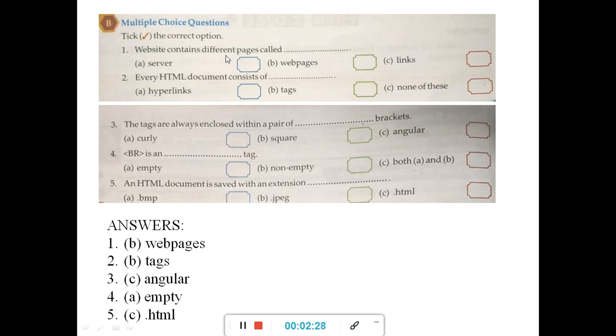Number B. Website contains different pages called web pages. The pages that you get in the websites are known as the web pages. Every HTML document consists of tags. The tags are always enclosed within a pair of angular brackets, not curly, not square, within a pair of angular brackets. BR is an empty tag. It does not have any closing tag, it has only opening tag. An HTML document is saved with an extension .html. Put a tick mark over here.